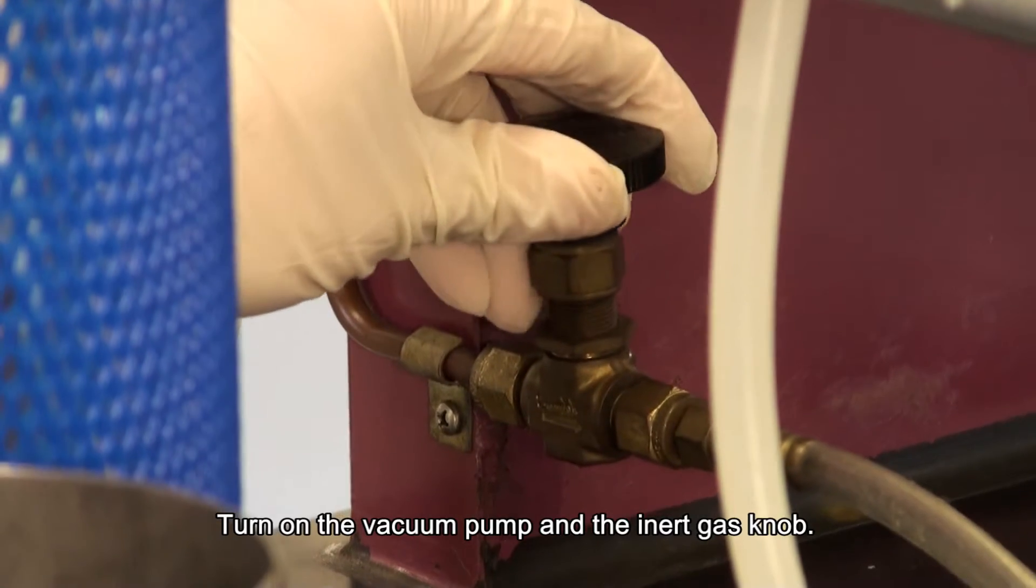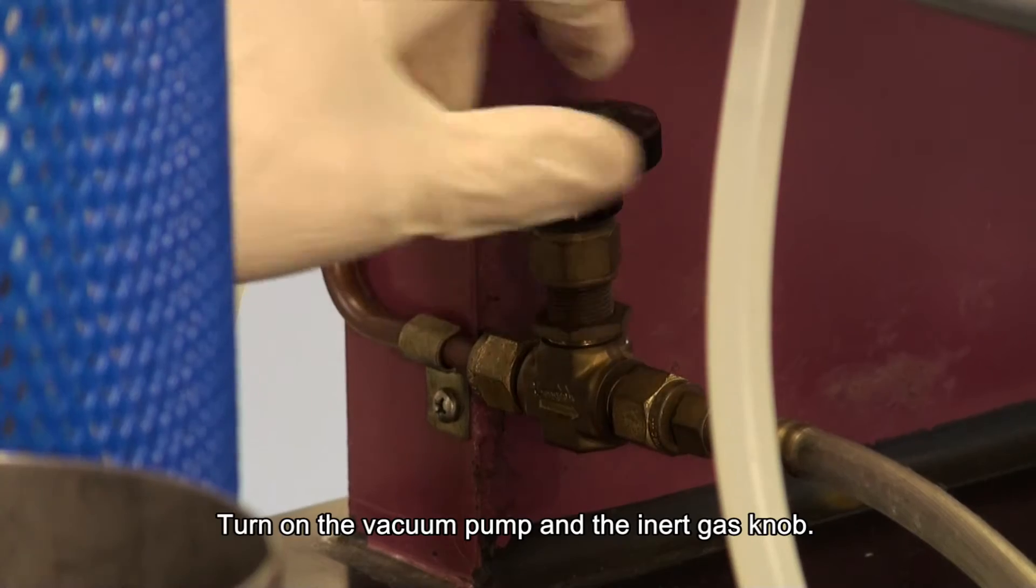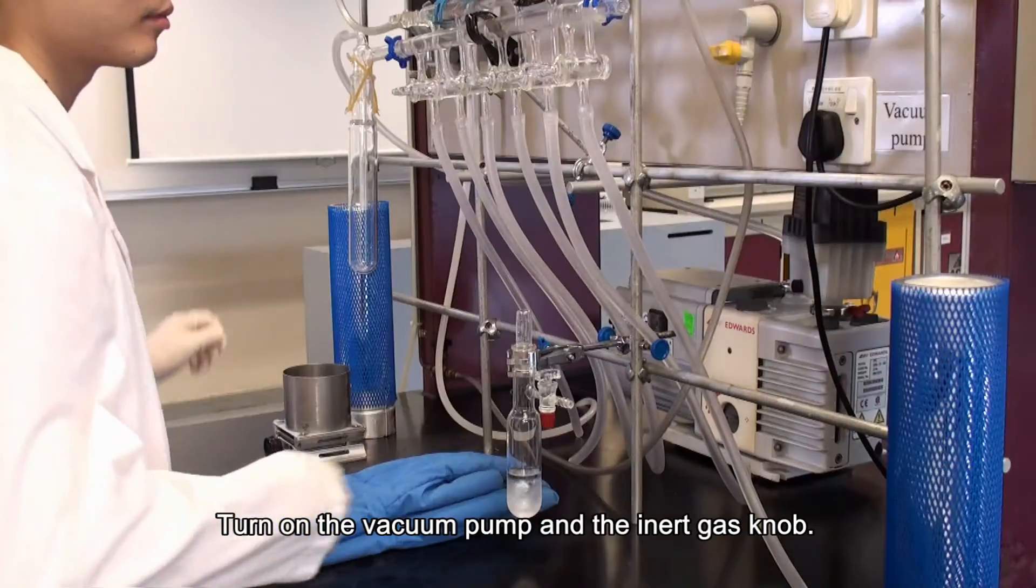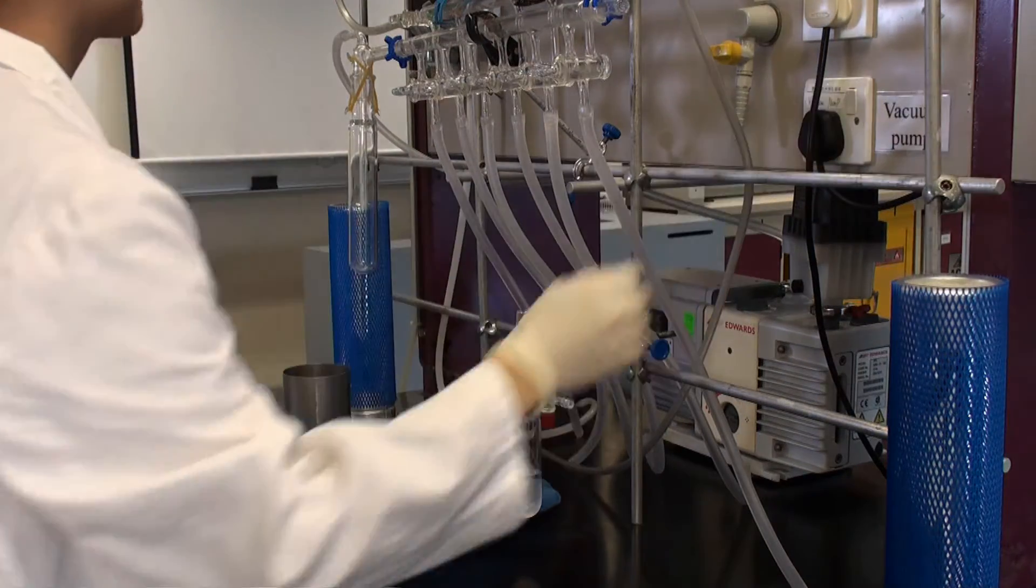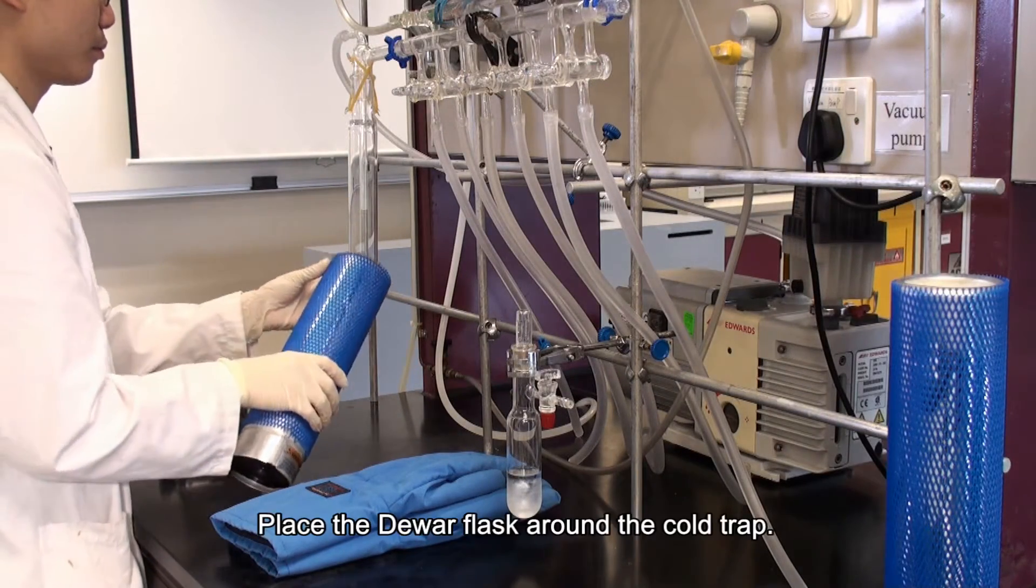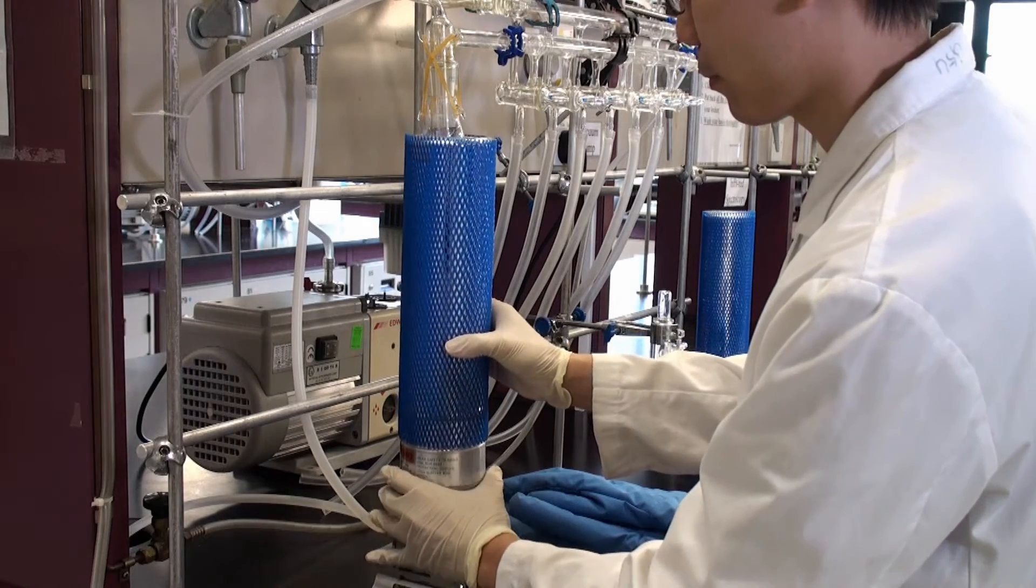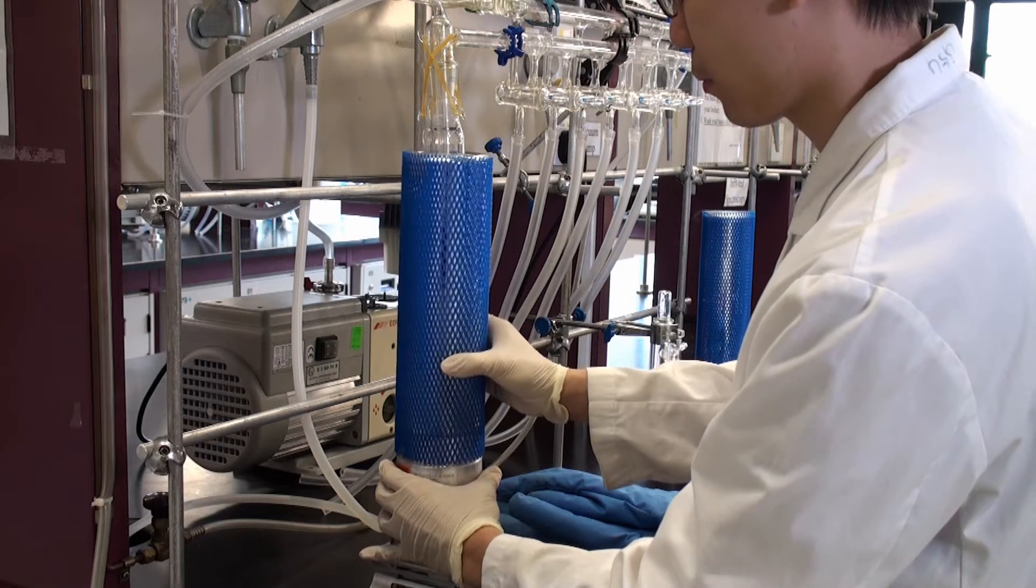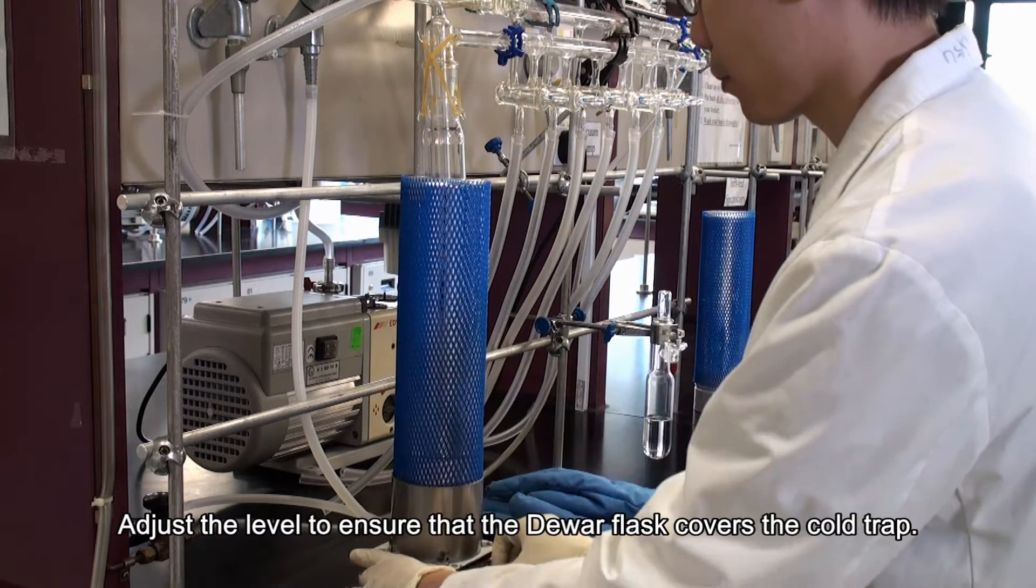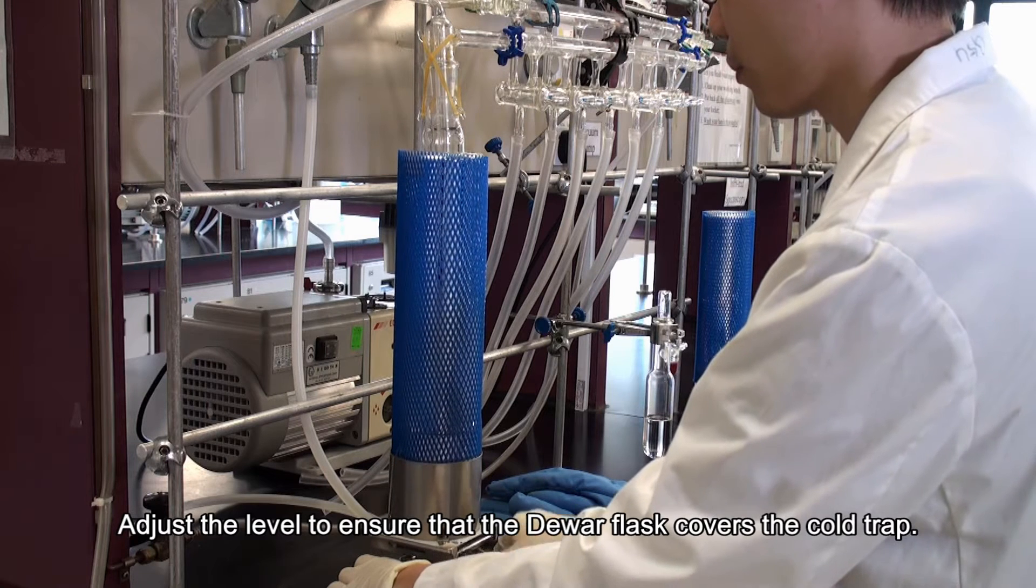Turn on the vacuum pump and the inert gas knob. Place the Dewar flask around the cold trap. Adjust the level to ensure that the Dewar flask covers the cold trap.